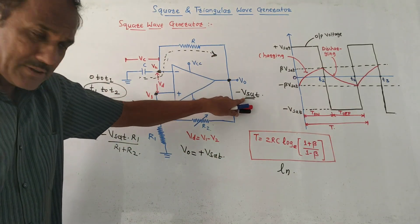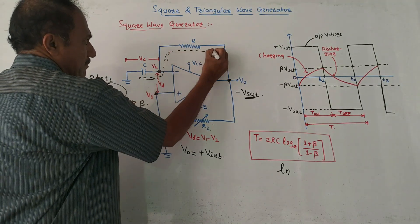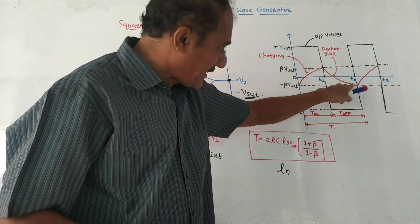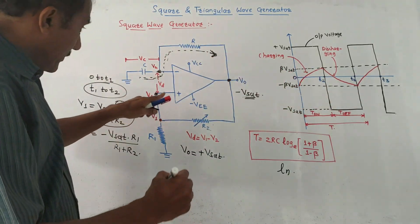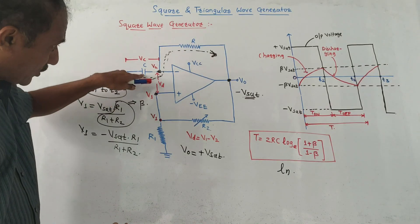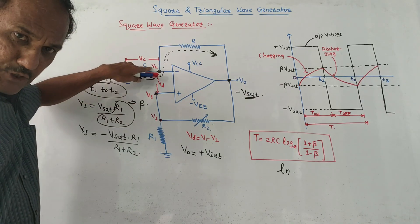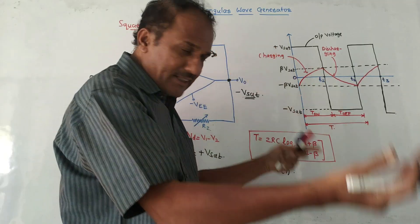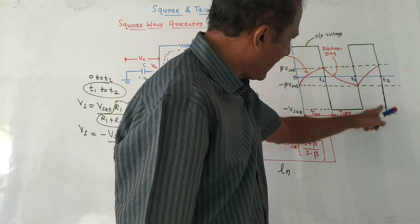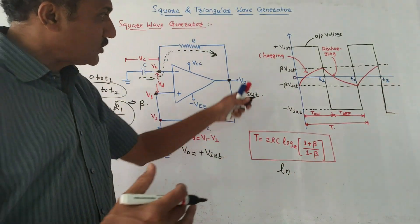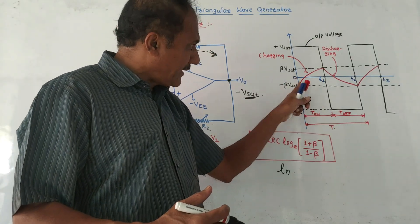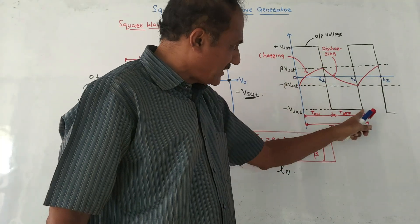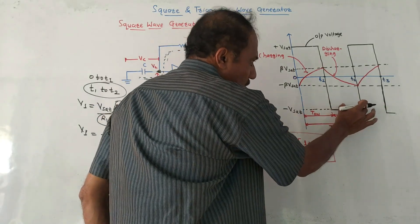When the output voltage becomes minus V-saturation, the capacitor starts discharging following the same path but in the opposite direction. This discharge of capacitor is denoted from T1 to T2. The point at which V2 becomes more negative than V1 — because the capacitor is continuously discharging — then Vd = V1 minus V2, and minus minus becomes plus. This means the cycle repeats: after that, the value switches back to plus V-saturation, and then again to minus V-saturation. This is how the square wave is generated.